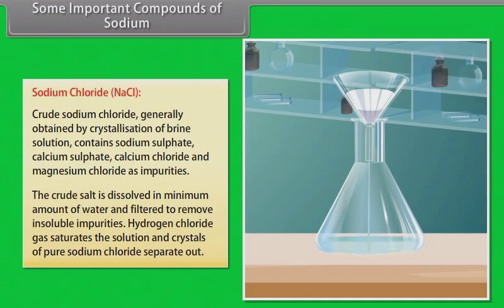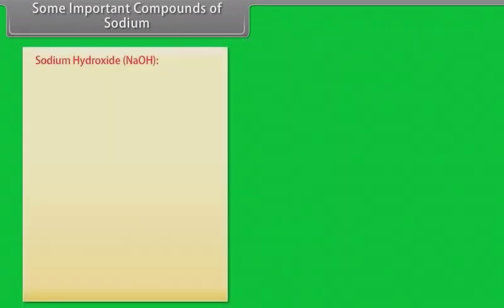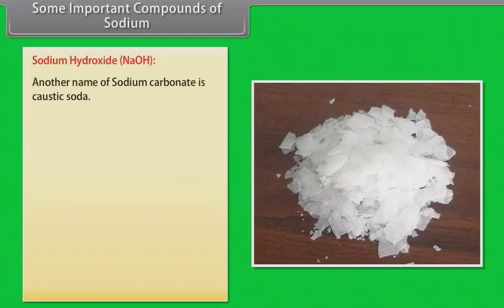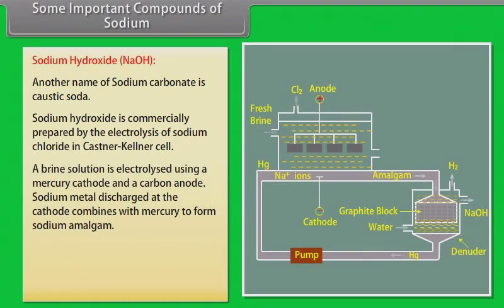Hydrogen chloride gas saturates the solution and crystals of pure sodium chloride separate out. Sodium hydroxide, also called caustic soda, is commercially prepared by the electrolysis of sodium chloride in a Kastner-Kellner cell. A brine solution is electrolyzed using a mercury cathode and a carbon anode. Sodium metal discharged at the cathode combines with mercury to form sodium amalgam.